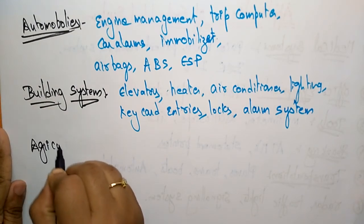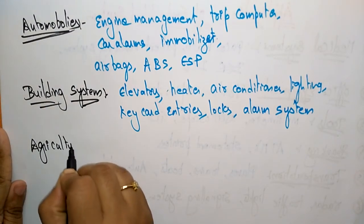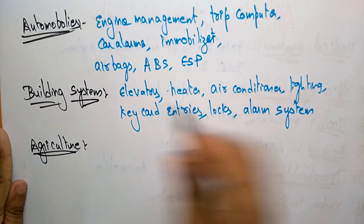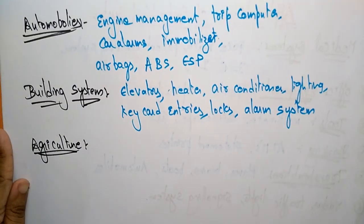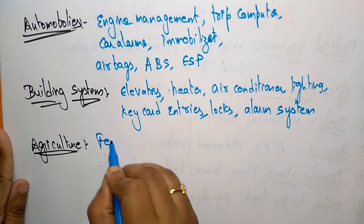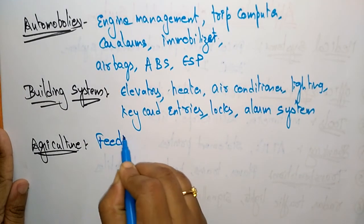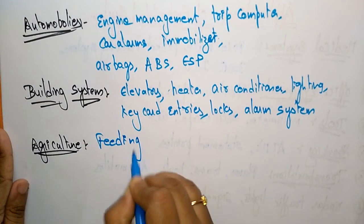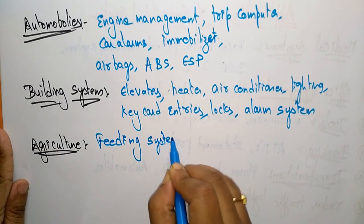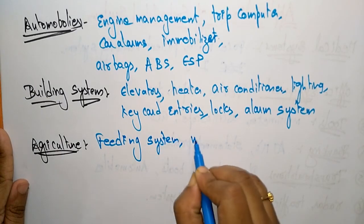In the area of agriculture, embedded systems are used in feeding systems and milking systems.